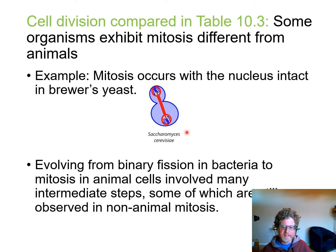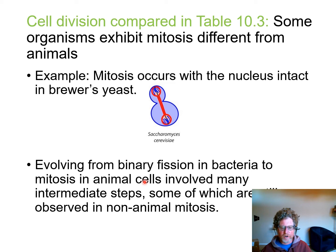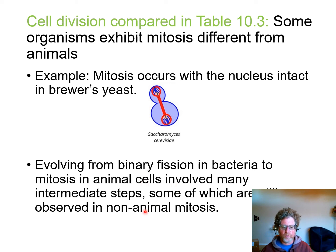There are organisms such as yeast that do mitosis differently than animal cells. This tells us you didn't go from binary fission to animal-cell-type mitosis overnight — there were many in-between steps. There are still organisms like single-cell protists and yeast that perform these intermediate forms of mitosis. These represent steps that had to occur before the current pathway of mitosis evolved in animal cells.